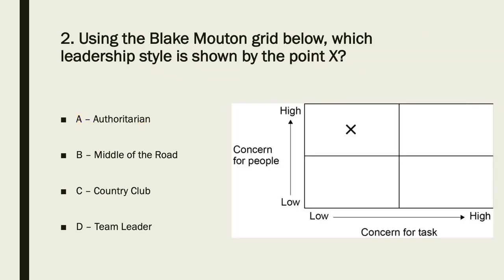The answer to question two is C — country club. High concern for people but less of a concern for the task. Of course the answer is C, country club.